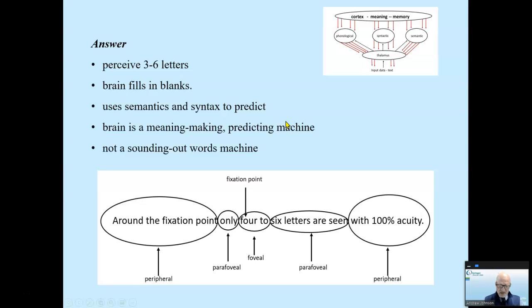Again, the reader uses minimal letter clues. The brain fills in the blanks. The brain uses syntax and semantics to predict. And the brain is a meaning making machine looking to create order out of chaos, not a sounding out word machine. Here we get the foveal, the fixation, six letters, four to six letters are seen. There you go. You get the idea of the foveal, parafoveal, and peripheral.